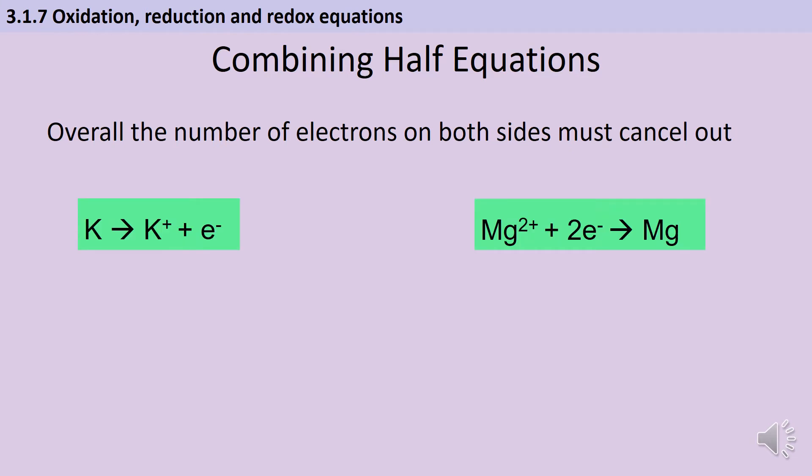So here's a very simple example. We could have some kind of displacement reaction where potassium displaces magnesium. So magnesium is currently in a compound as Mg2+ ions and it's going to turn back into an atom which is going to require some electrons. And then at the same time the potassium which starts out as an atom turns into an ion by losing an electron.